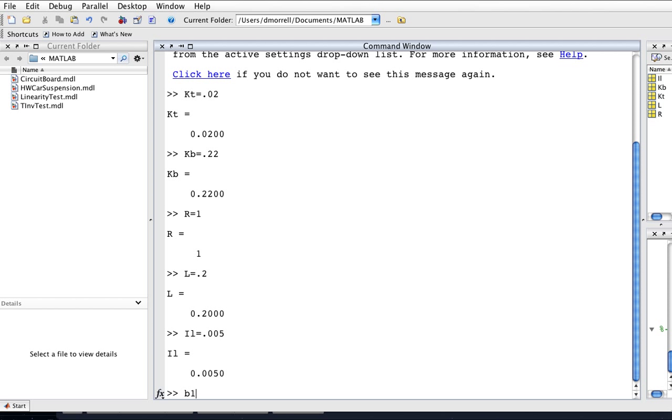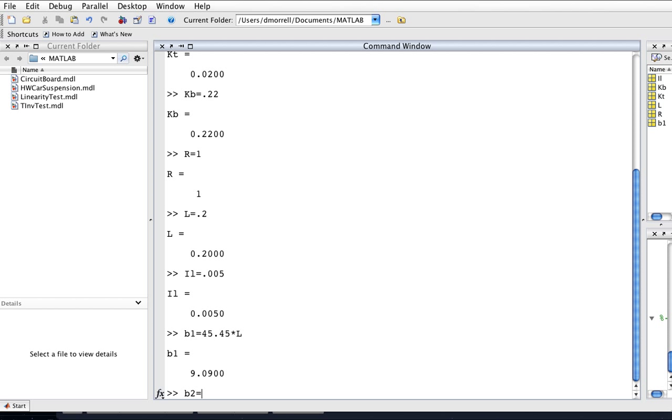B1, which is going to be the coefficient in the numerator for our S term, is going to be 45.45 times L. B0, which is the constant coefficient in the numerator, is going to be 45.45 times R. In the denominator, A2 is equal to L, A1 is equal to R, and A0 is equal to KT times KB divided by IL. Okay, so now we're going to make a vector in order to actually do the partial fraction expansion. B is B1, B0, A is A2, A1, A0.